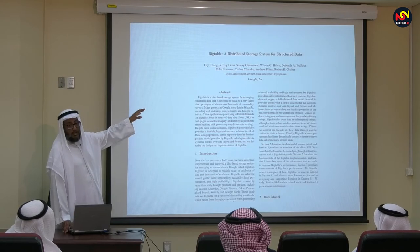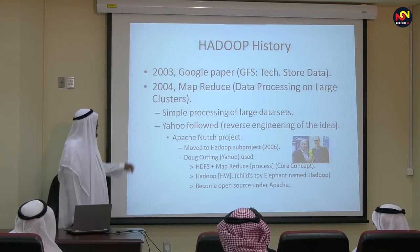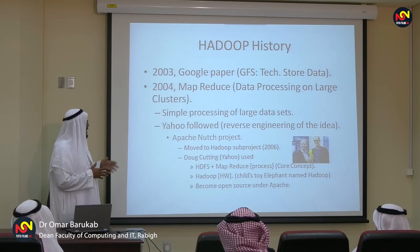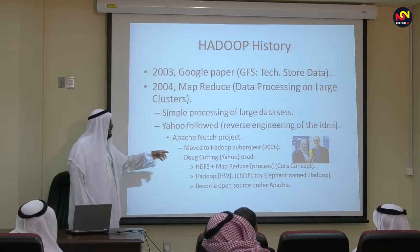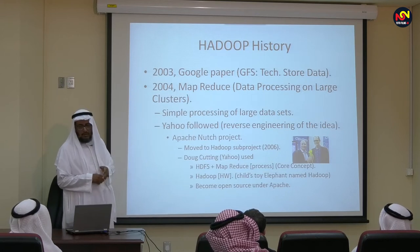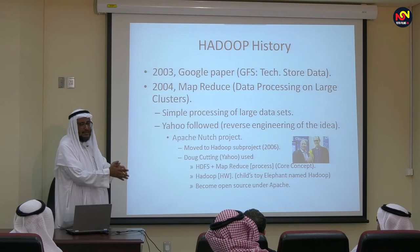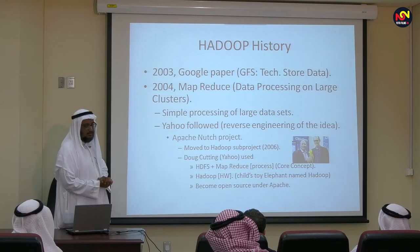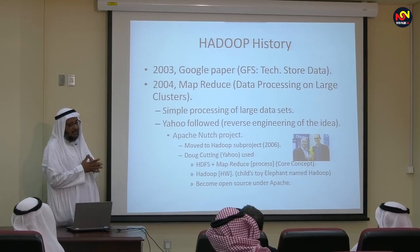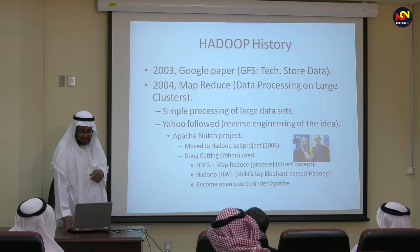MapReduce became a technique for simple processing of large amounts of data. Yahoo — Doug Cutting — was working at Yahoo and had a son with a small toy elephant. He called it Hadoop. So the framework is named after a child's toy elephant. It consists of the Hadoop Distributed File System and MapReduce for processing. These are the three key features.